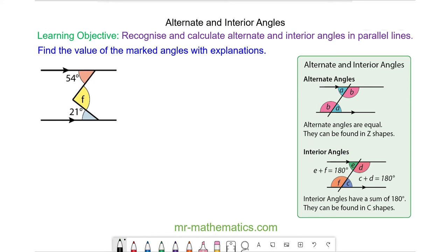So the key to this question was to draw a third parallel line which crosses through this point here. And now we have two pairs of alternate angles. So this angle is equal to 54 degrees. And the other part of angle F is alternate with the 21 degree angle.